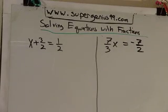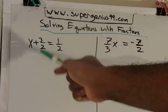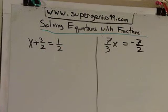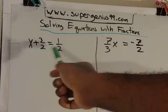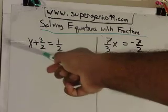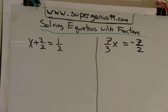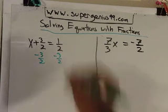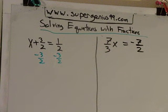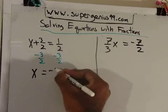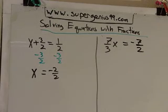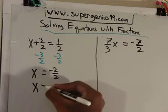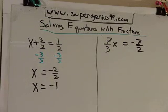The first equation with fractions we're going to solve is: x plus 3/2 is equal to 1/2. Anytime you're solving an equation, your goal is to get the variable x by itself. So what do you have to do? Subtract 3/2 from both sides. Now, 1/2 minus 3/2 is negative 2/2, and negative 2/2 reduced is negative 1.